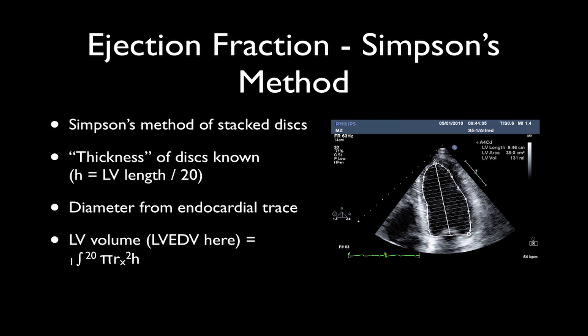The Simpson's method traces the endocardial border — the innermost layer of the left ventricular cavity — usually in the apical 4-chamber view and at right angles to it, the apical 2-chamber view. The thickness of the discs are known; the length of the ventricle is divided into 20, so the height of each disc is 1/20th of the left ventricular apical-to-basal length. The diameter of each disc is taken from the tracing of the endocardium to the midline long axis of the heart.